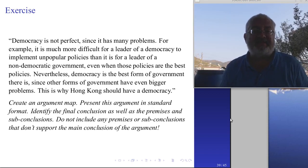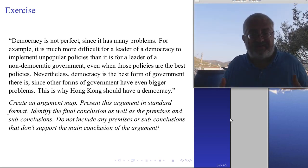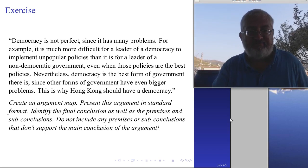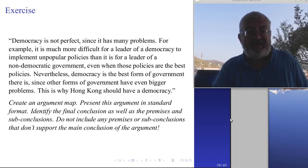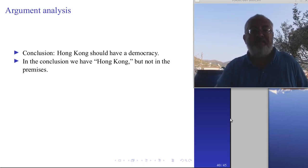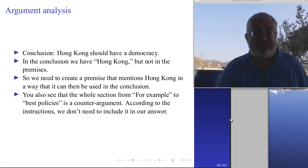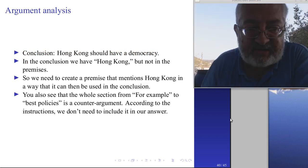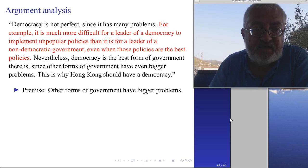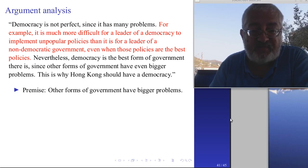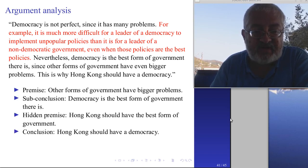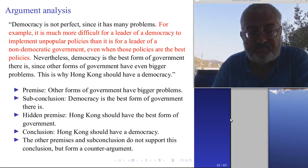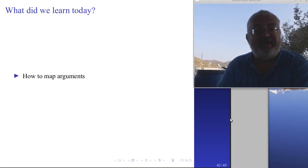Here is another exercise — the democracy exercise from the previous session. Present the argument in standard form, identify the final conclusion, and draw an argument map. The conclusion is 'Hong Kong should have a democracy.' If you want to know more about how to analyze this, go back to the presentation on argument analysis — here it is only about the actual drawing. You can include the counter-argument drawn in red with a minus sign, or you can leave it out. Drawing counter-arguments is optional but you can of course include them.